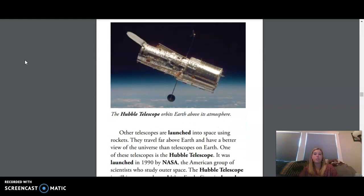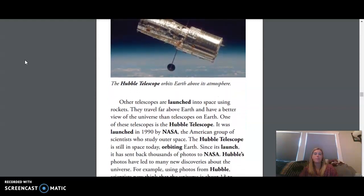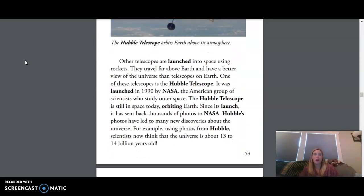This is the Hubble Telescope that orbits Earth above its atmosphere. Other telescopes are launched into space using rockets. They travel far above Earth and have a better view of the universe than telescopes on Earth. One of these telescopes is the Hubble Telescope. It was launched in 1990 by NASA, the American group of scientists who study outer space.